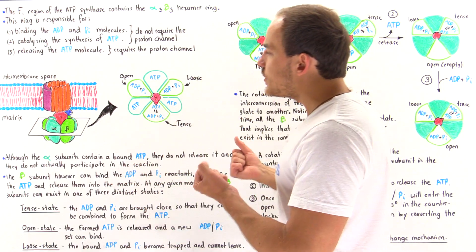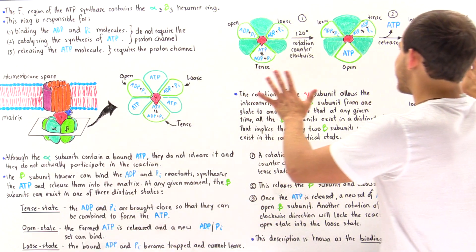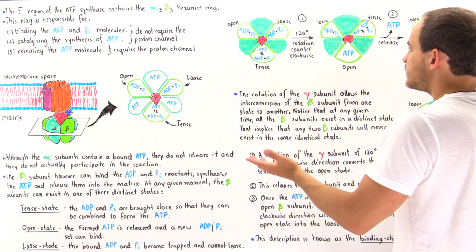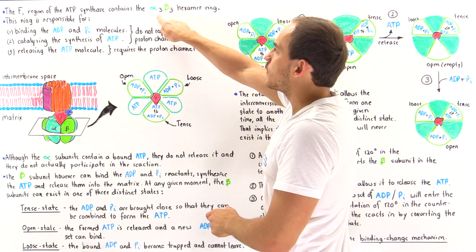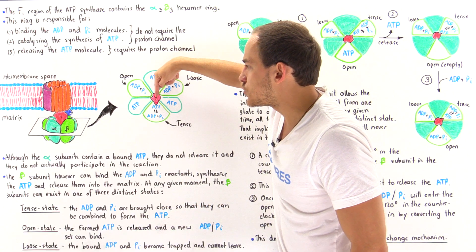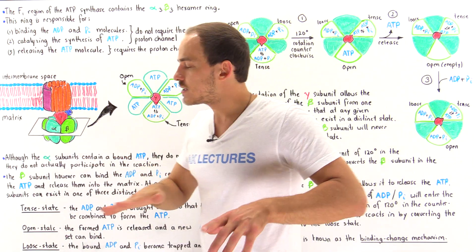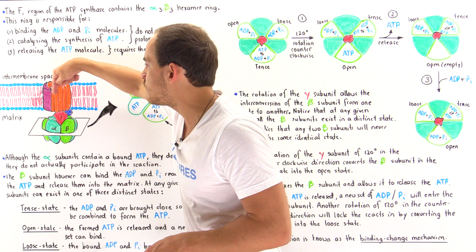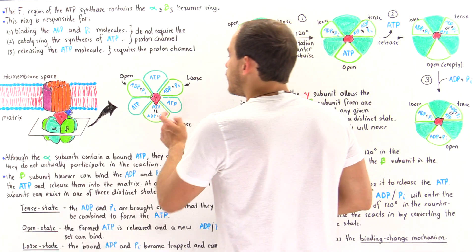The next question is: what determines the state of a particular beta subunit? Looking at the diagram, as we go from one structure to the next, the alpha-3 beta-3 hexamer does not rotate. Instead, the central gamma structure — shown in red — rotates. This gamma structure, driven by rotation of the C ring as we'll see in the next lecture, causes a conformational change in the beta subunits.